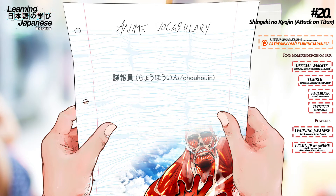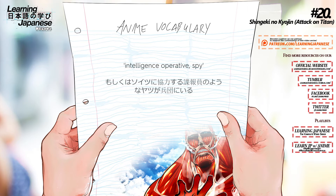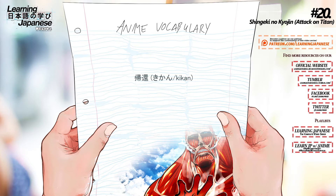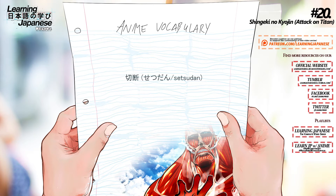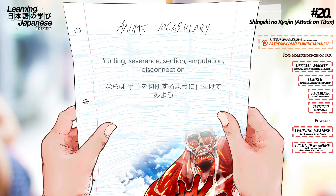Capture, seizure. 情報員 (jouhouuin) — Intelligence operative, spy. 機関 (kikan). Repatriation, return, feedback. 切断 (setsudan) — Severance, section, amputation, disconnection. 確信 (kakushin).